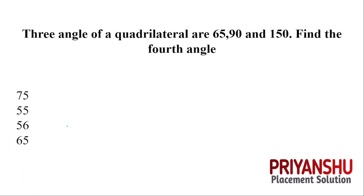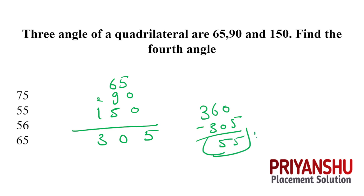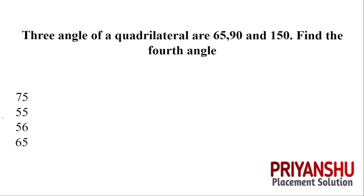Three angles of a quadrilateral are 65°, 90°, and 150°. To find the fourth angle: 65 + 90 + 150 = 305, and 360 − 305 = 55. The fourth angle is 55°.